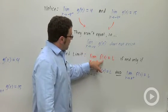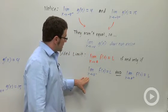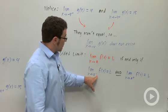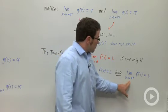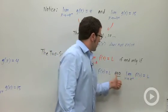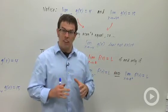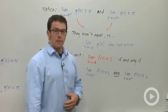Limit as x approaches a of f of x equals l if and only if the two one-sided limits, the limit as x approaches a from the left and the limit as x approaches a from the right of f of x equal l, the same number. Only if those two one-sided limits have the same value will the two-sided limit exist.